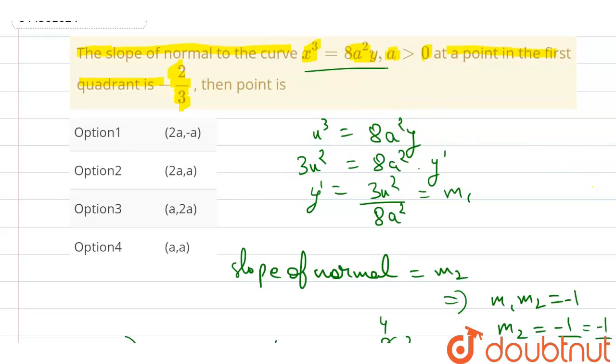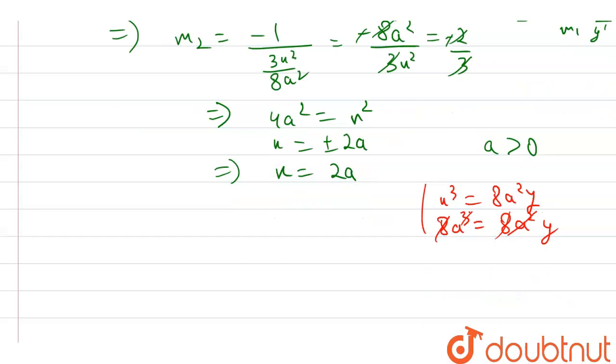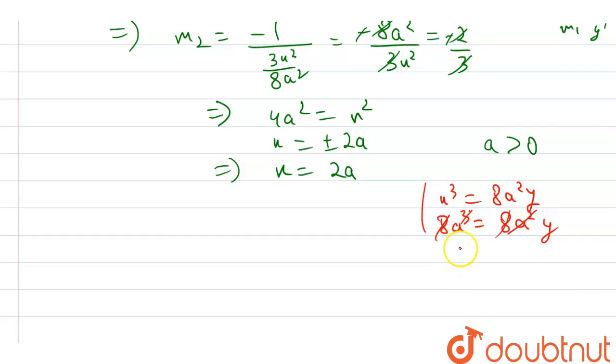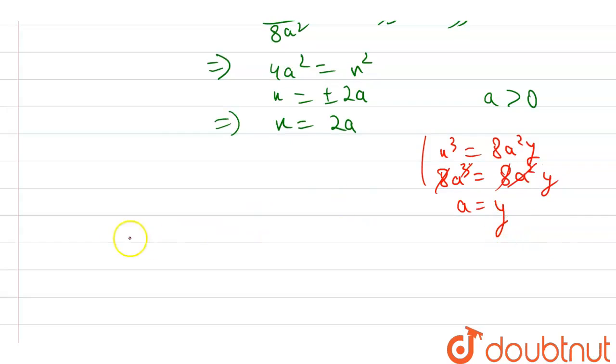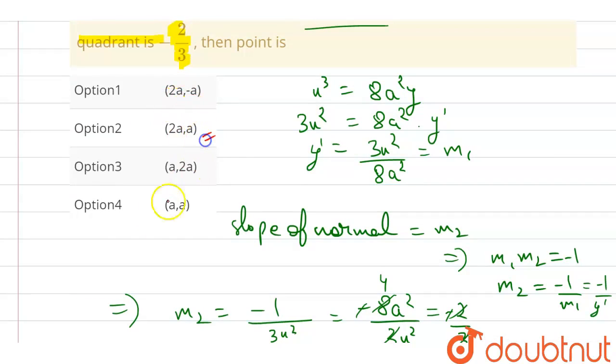Now, calculating y value from this. So it is x³ = 8a²y. Putting in this, it becomes 8a³ = 8a²y. This cancels. So what remains? a = y, y = a. So the point comes, which is (2a, a). So the second option is correct.